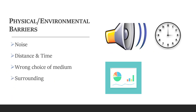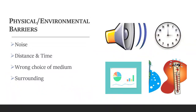Our surroundings will also include the kind of weather conditions we are currently in. Too hot or too cold weather conditions may affect the emotional state and mood of a person, and it will hamper the capacity to communicate effectively. So these are the typical physical or environmental barriers.